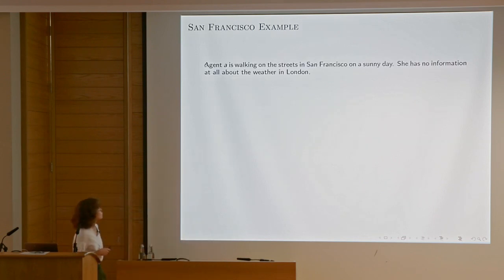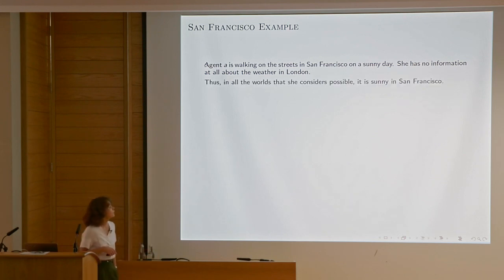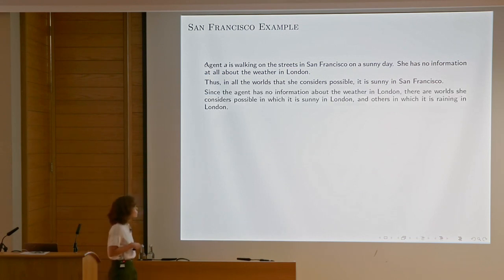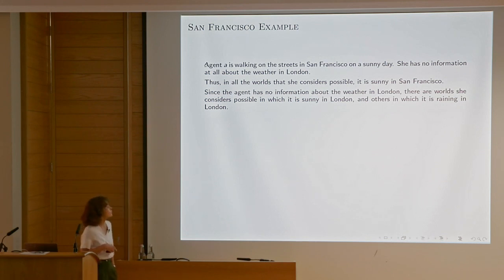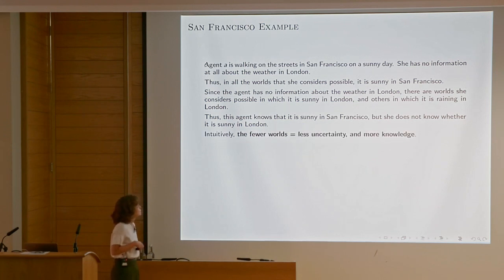For instance, agent A is walking on the streets in San Francisco on a sunny day. She has no information at all about the weather in London. In all the worlds she considers possible, it's sunny in San Francisco. Since she has no information about London, there are worlds she considers possible in which it is sunny in London and others in which it's raining. Thus, this agent knows it's sunny in San Francisco, but she does not know whether it's sunny in London.